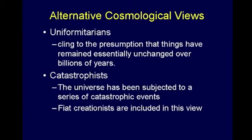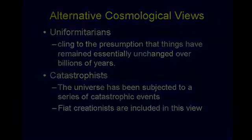There are some alternative views. The uniformitarians cling to the presumption that things have remained essentially unchanged over billions of years — we reject that for lots of reasons. The catastrophists say the universe has been subjected to a series of catastrophic events. And fiat creationists — that's us — are included in this view: people who believe that creation came by the Word of God and so on.